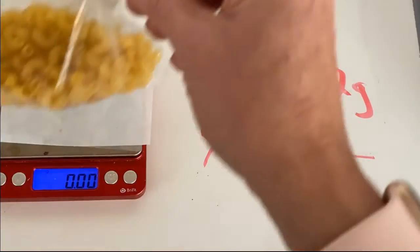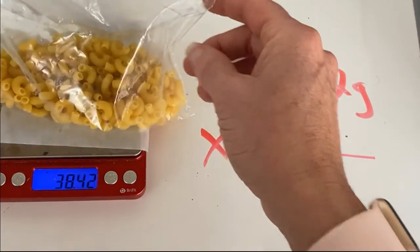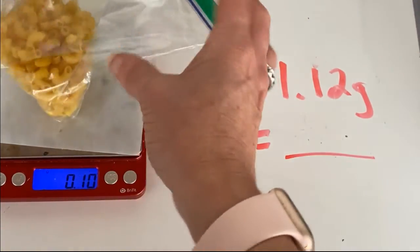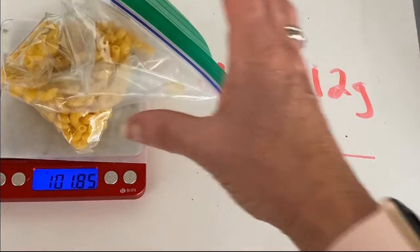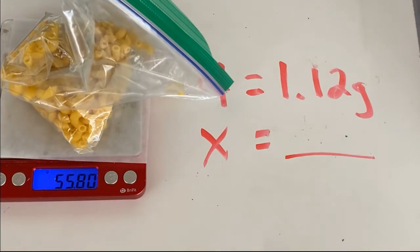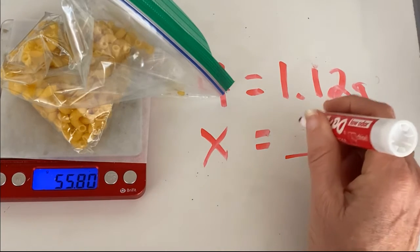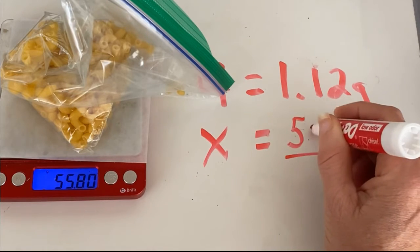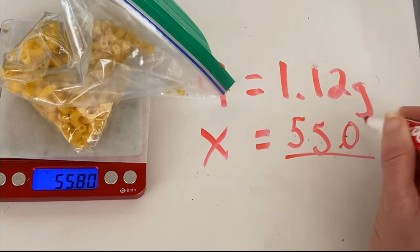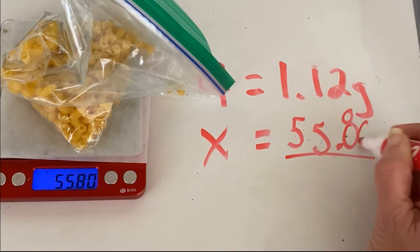I'm going to find the mass of the entire bag. Now if you want to remove them from the bag you can. You might have to do it several times. So the entire bag of noodles has a mass of 55.80 grams.